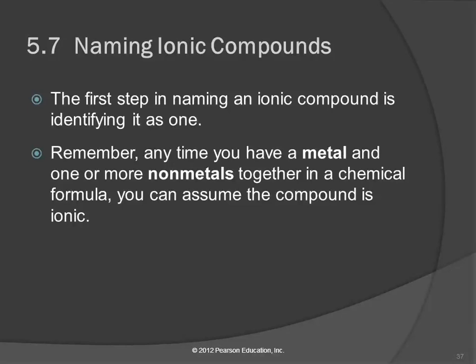We'll start our study of nomenclature with ionic compounds. The first step is always identifying that it is an ionic compound. How do you do that? The biggest clue is the presence of a metal. If you have a metal and one or more non-metals, it's probably an ionic compound. So if you see a metal, think ionic compound.